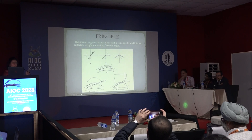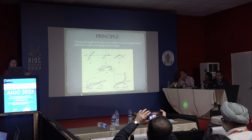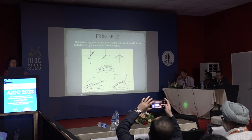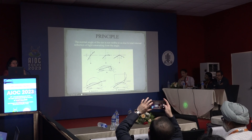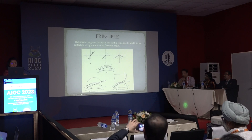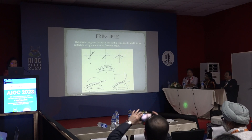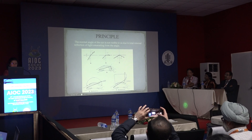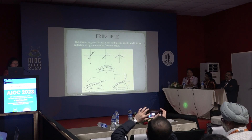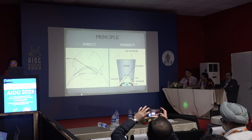The normal angle of the eye is not visible due to total internal reflection. That is why we need a gonioscope or gonioscope mirror to cut this angle of refraction. Depending on the type of gonioscope used, we have the direct and the indirect technique.